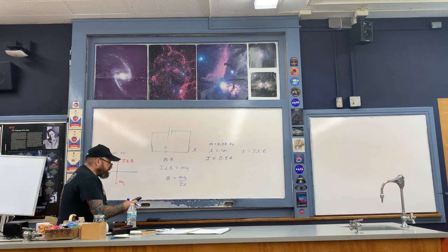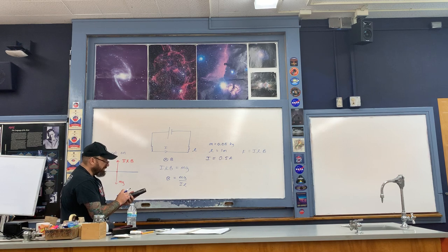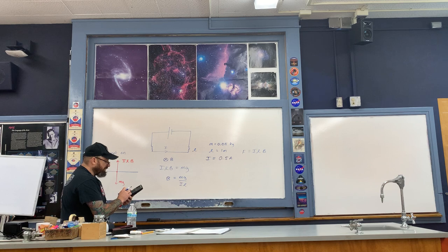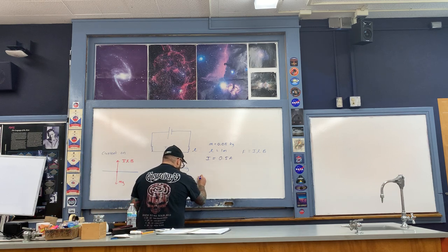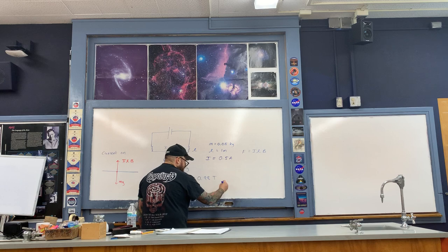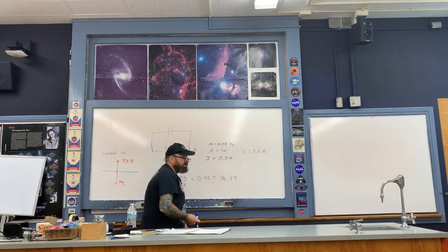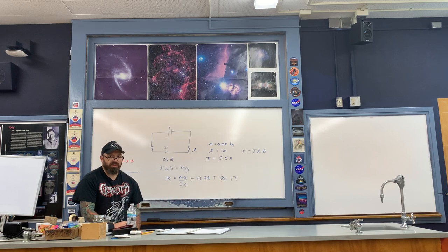Mathematically, we get 0.05 times 9.8 in the numerator, divided by 0.5 amps times 1 meter for the length. This ends up being 0.98 tesla — so it's about one tesla. That is the strength of the magnetic field.